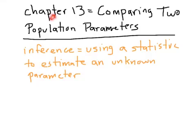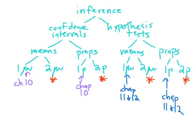Welcome back everybody. This is a video for chapter 13, which is all about comparing two population parameters. This is continuing our study of inference, which we've been doing in chapters 10, 11, and 12. Just to remind you, what do we mean by inference? Inference is using a statistic to estimate an unknown parameter. The remainder of the year is all about inference, and the inference toolbox is going to become your new best friend.